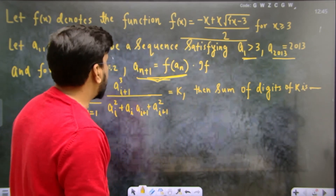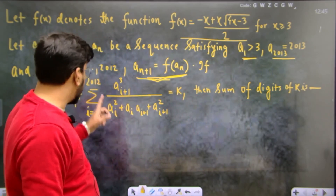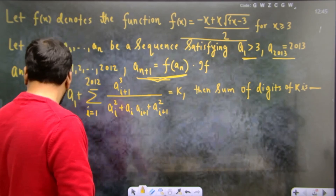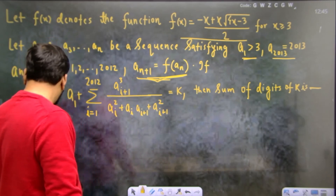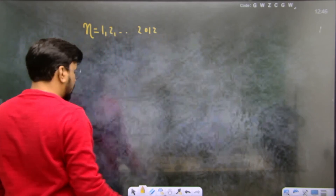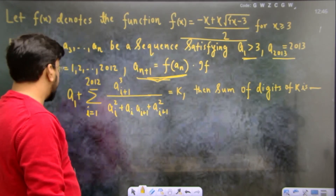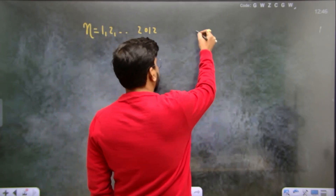Let's start with this question. For n equal to 1 to 2012, the relation is: a(n+1) equals f(an).